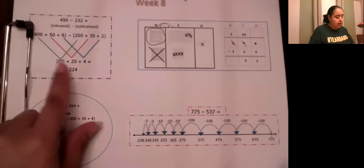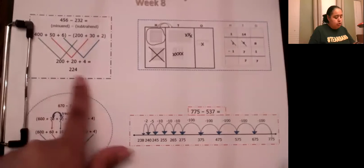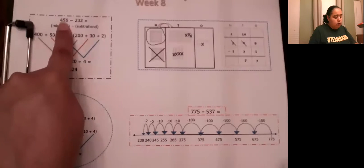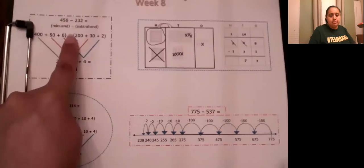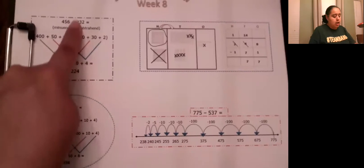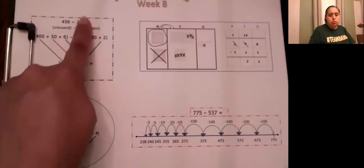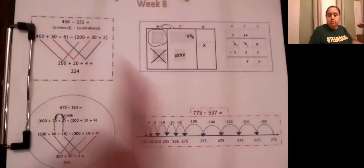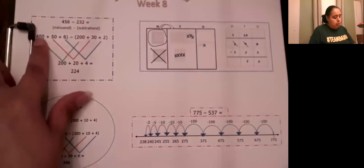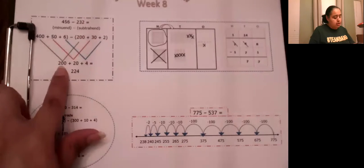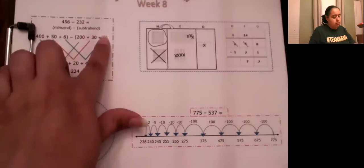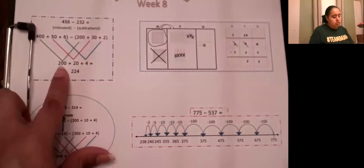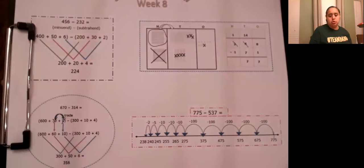The first strategy is using place value. For example, 456 is 400 plus 50 plus 6. We're subtracting 232, which is 200 plus 30 plus 2. You subtract 400 minus 200 is 200, 50 minus 30 is 20, and 6 minus 2 is 4. Put them together and that gives you 224.